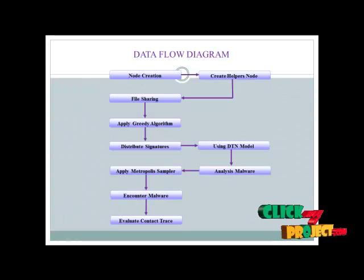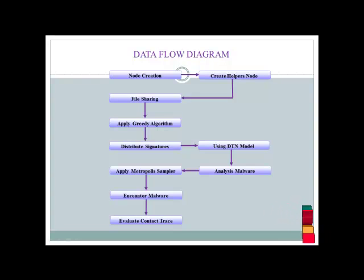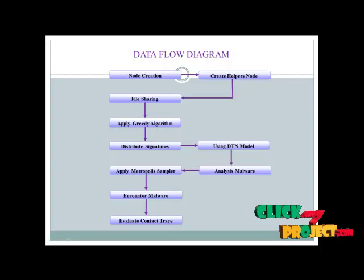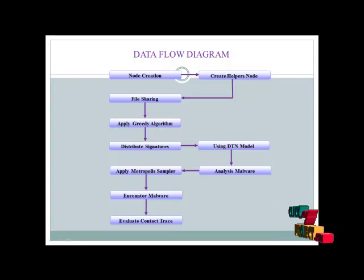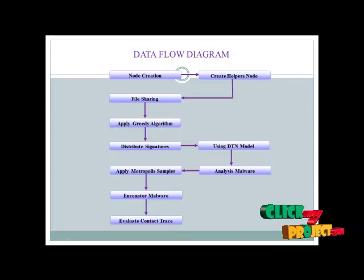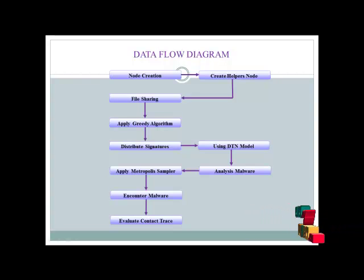Now the flow of the process. Initially, create the node, and based on the node creation we create the helper node and then perform file sharing. The file sharings are applied into the greedy algorithm to find the optimized path to reach the source and destination.